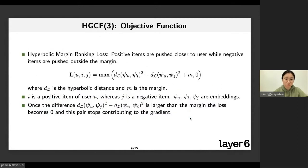Our objective function, we call it hyperbolic margin ranking loss, is about optimizing the position of user and item embeddings on hyperbolic space with the margin ranking loss. We want to push each user closer to positive items and further from randomly sampled negative items. We use a fixed margin M. d_L is the hyperbolic distance I just explained in the preliminaries. The purpose of having a margin is once the distance difference is larger than the margin, which means this is an easy triplet and the user is already close enough to the positive against the negative, the loss becomes zero and the pair stops contributing to the gradient.